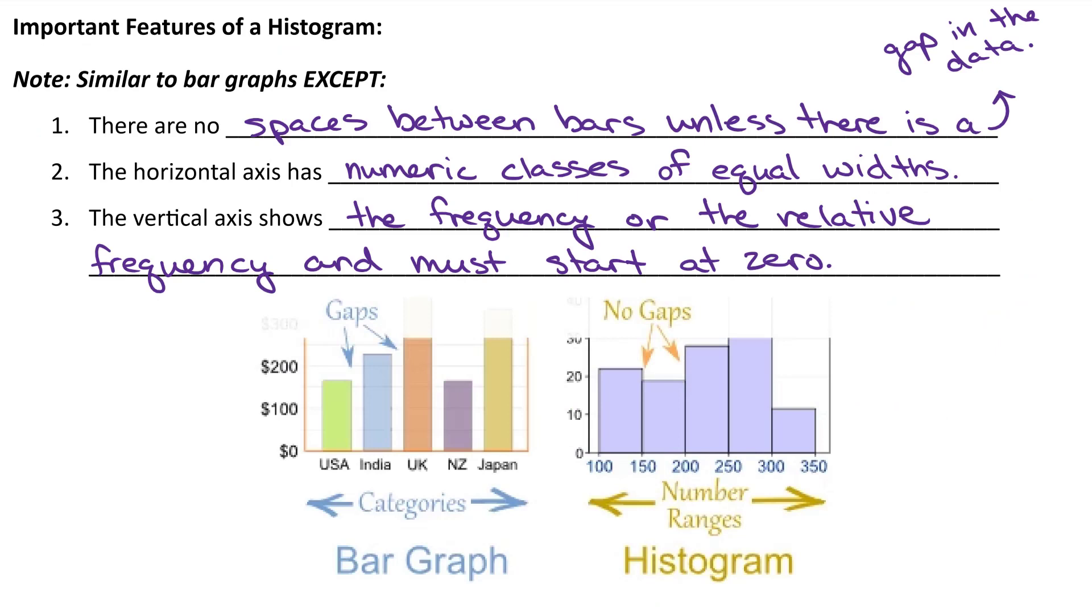So some important features of histograms, they are similar in some ways to bar graphs except first, there's no spaces between the bars. Your bars in a histogram will always be adjacent unless there's a gap in the data. Your horizontal axis will be numeric classes of equal width instead of categories. And the vertical axis is going to show the frequency or relative frequency and must start at zero. Again, you may see some graphs in the media where they've got some zigzag to jump into a higher value, but that's often misleading. So again, I suggest we always start at zero.